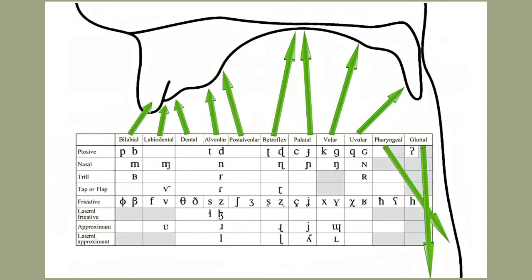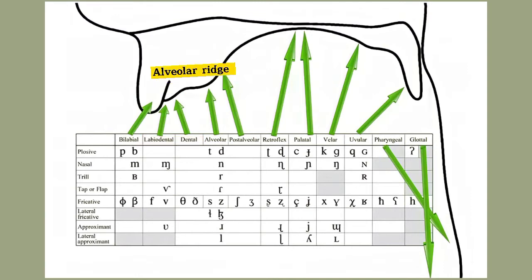Let's move to the first one. For bilabial sounds, the passive articulator is the upper lip. Next, for labiodental and dental sounds, the passive articulator is the upper front teeth. Next we have the alveolar ridge — the alveolar ridge is the curved line just behind the upper front teeth, and it is the passive articulator for alveolar sounds.